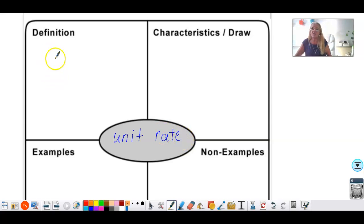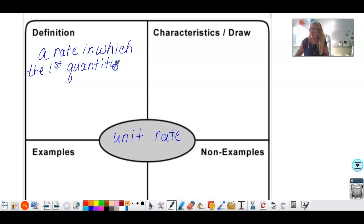The definition for unit rate is a rate in which, and this is the official back of the book definition, the first quantity is compared to one unit of the second quantity.